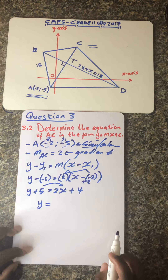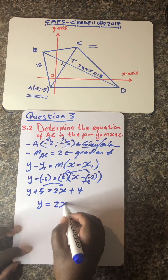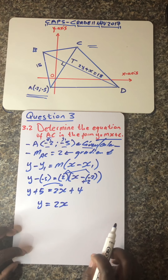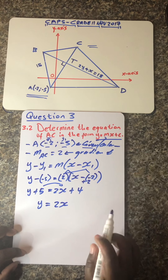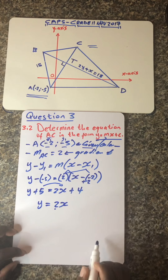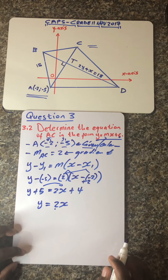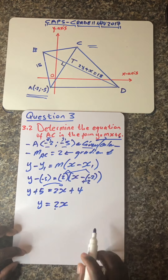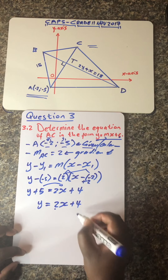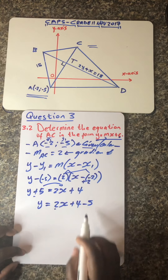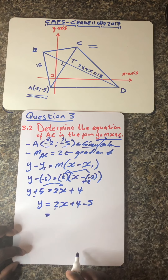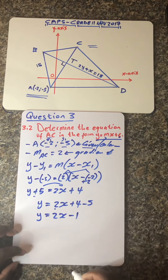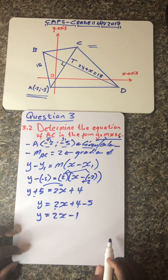Now we make y the subject of the formula — y should remain on the left side of the equal sign and we move everything else to the right. So we have 2x, and we move 5 to the other side where it changes sign from positive to negative. So the final answer in the requested form is y = 2x - 1, because 4 minus 5 equals -1.